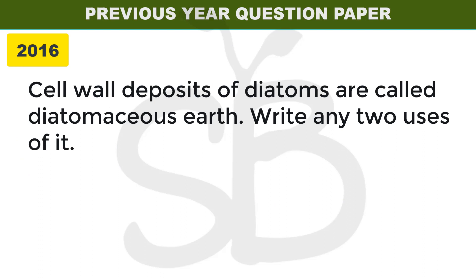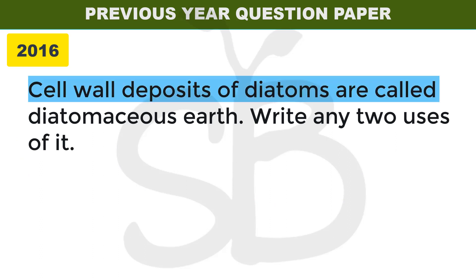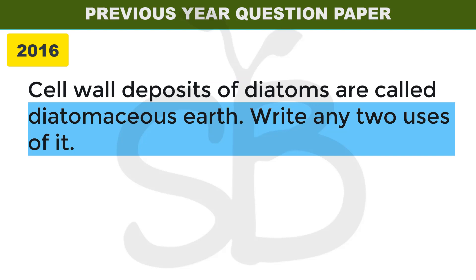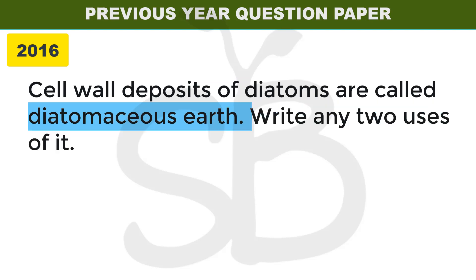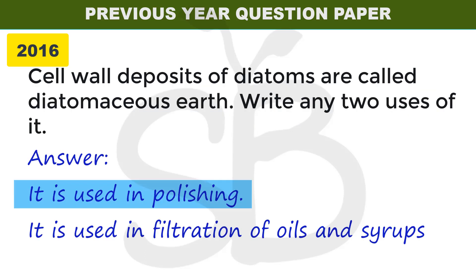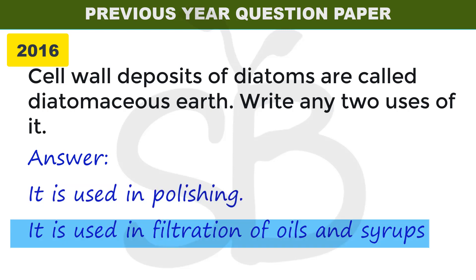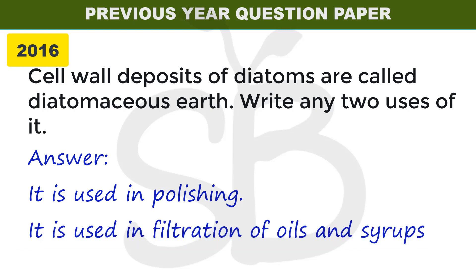Next question, 2016 improvement exam: the cell wall deposits of diatoms are called diatomaceous earth. Write any two uses of it. Diatomaceous earth is used for polishing, and it is also used in the filtration of oil and syrup. These are the two uses, each worth half a mark.